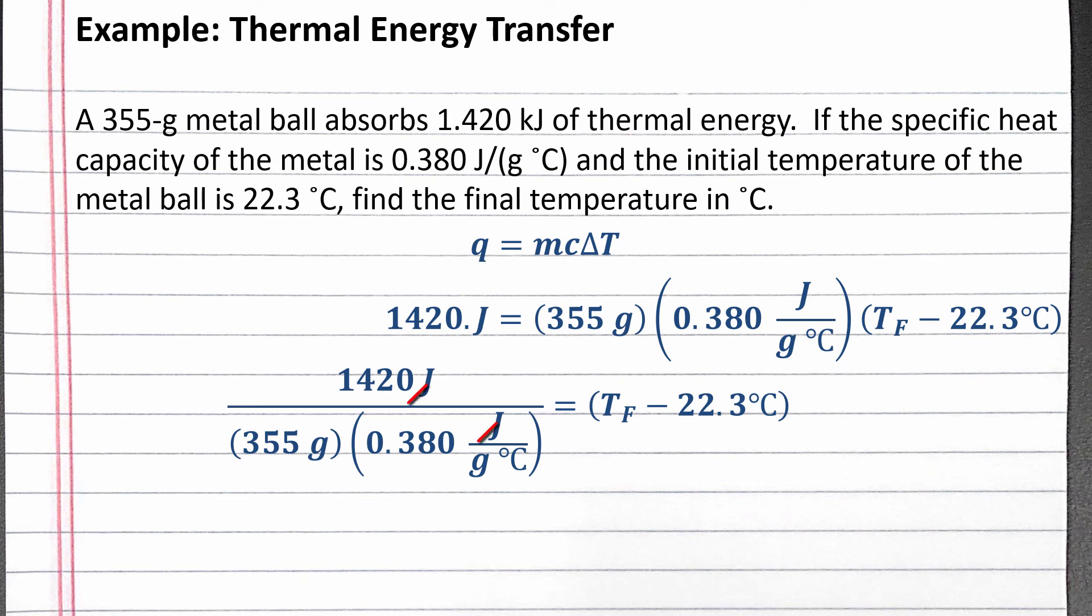On the left, the units of joules cancel, grams cancel in the denominator, and degrees Celsius flips to being in the numerator. Completing the division, we get 10.5 degrees Celsius equals the final temperature minus 22.3 degrees Celsius.